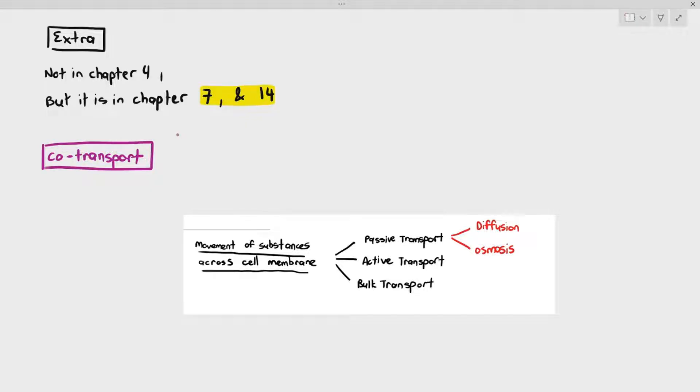The reason why I did not mention this is because you will only see examples of co-transport in Chapter 7, Plant Transport, and Chapter 14, Homeostasis. But I do want to cover it a little bit, so I just want you to be familiar with what co-transport is all about. You don't need to memorize it, but it helps us understand Chapter 7 and 14 in the future. And it's good to also realize that such transport proteins exist.